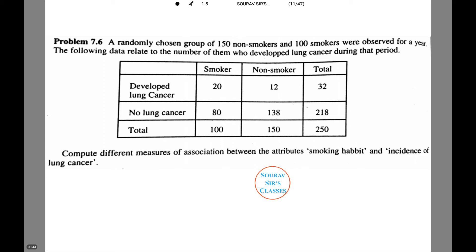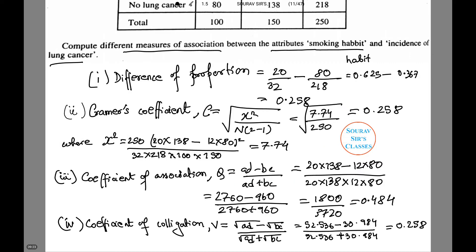Let's do one more question. A randomly chosen group of 150 non-smokers and 100 smokers were observed for a year. The following data relate to the number of them who developed lung cancer during that period. We are given the data in a table. We need to compute the different measures of association between the attributes: smoking habit and incidence of lung cancer. Upon reviewing all the different measures of association, we see that each one shows a slightly positive association between smoking habit and incidence of lung cancer.